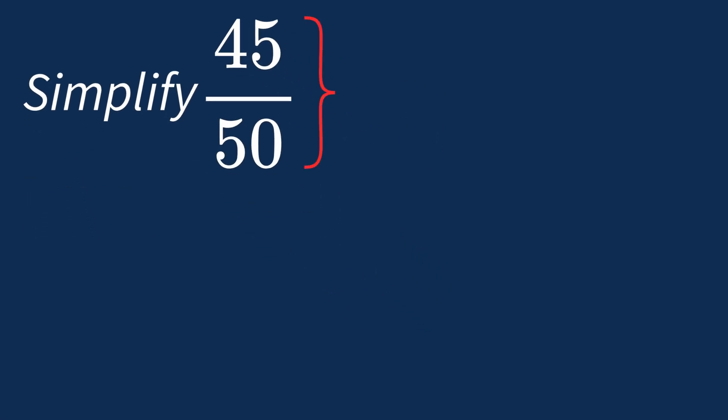To simplify 45 over 50, we need to look for the common factors between the top number, the numerator, and the bottom number, the denominator.